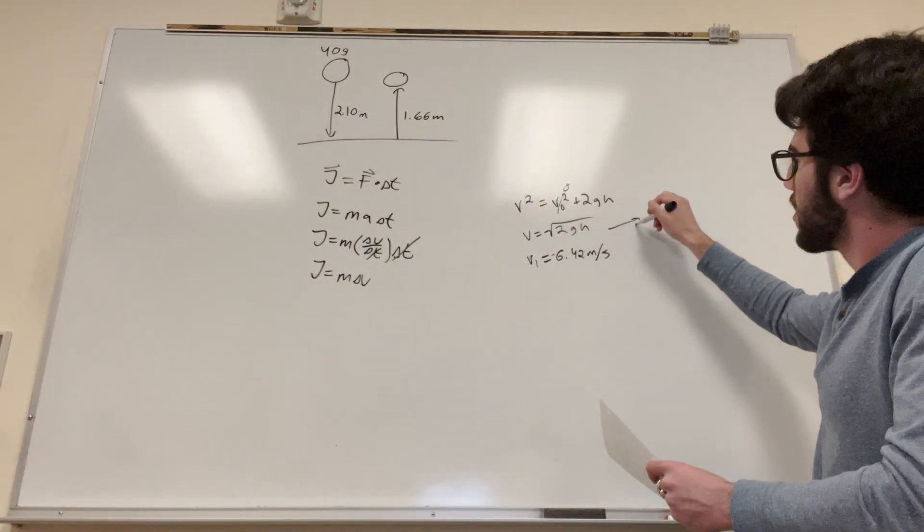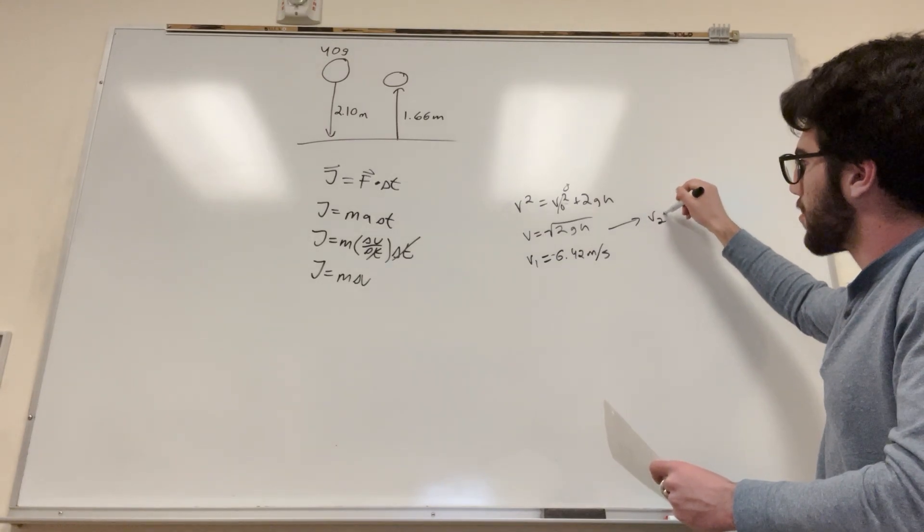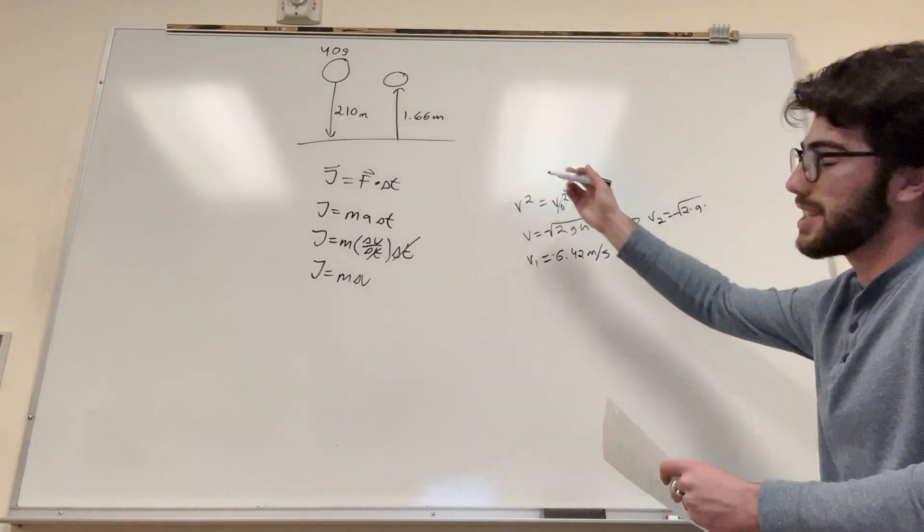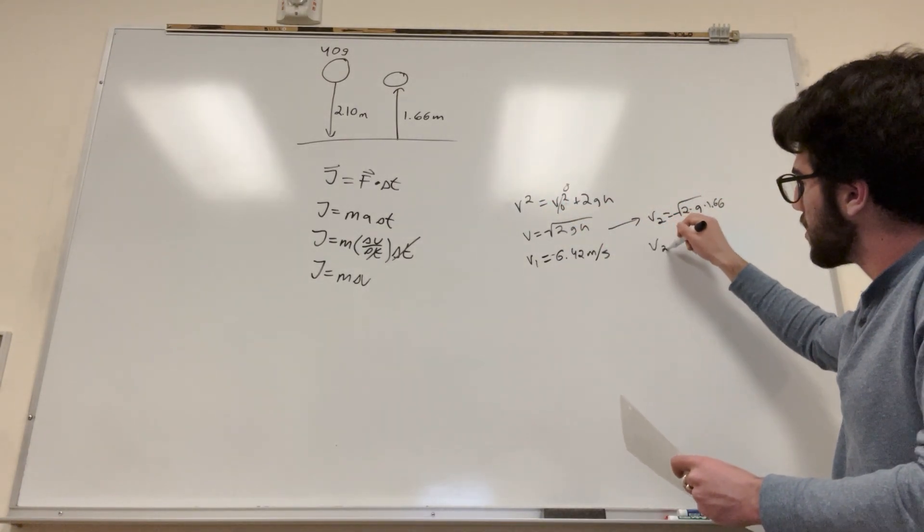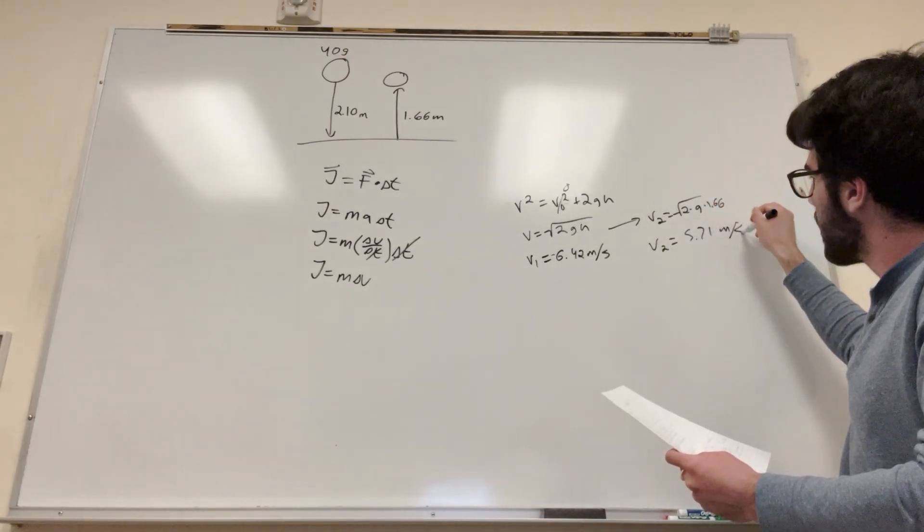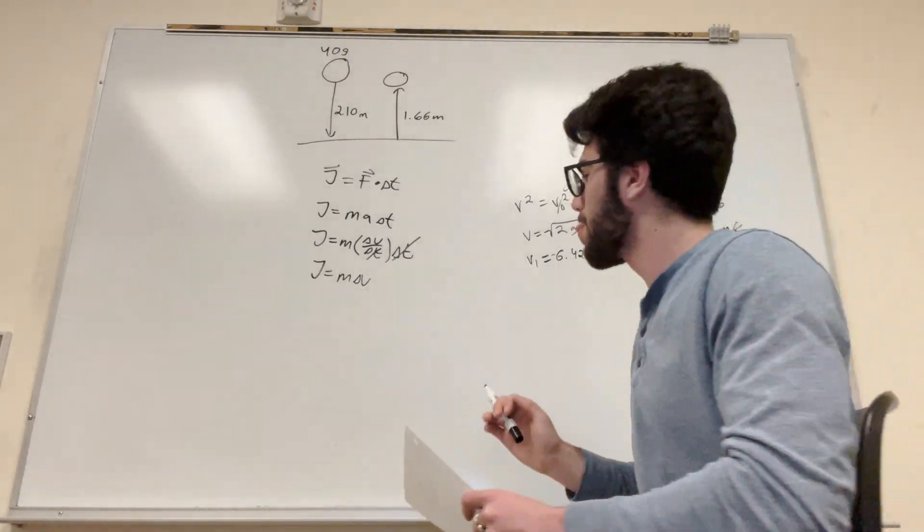So you can say, you know, here again, so the velocity part 2 is equal to 2 times gravity times the height, which is 1.66 this time, which this is equal to 5.71 meters a second. This is going back upward, though.